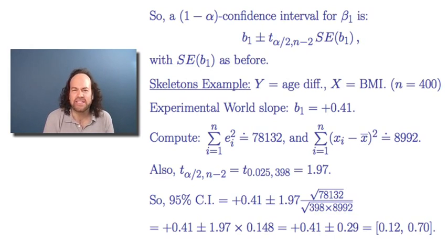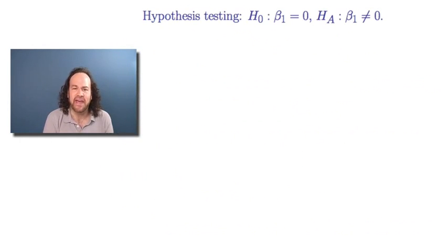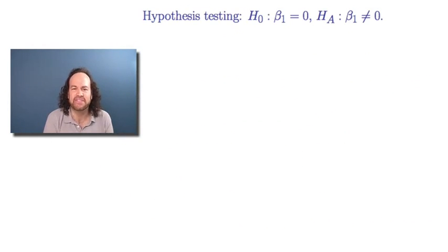So then you say, well, that's a confidence interval. What about a hypothesis test? Well, for a hypothesis test, the usual thing we want to test is whether the true underlying slope, the beta 1, is equal to 0 versus the alternative that it's some other value.